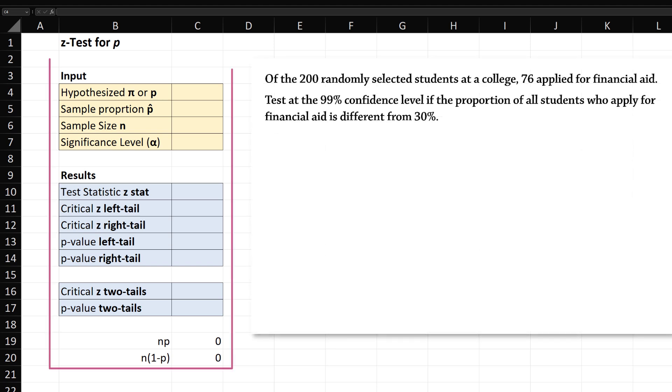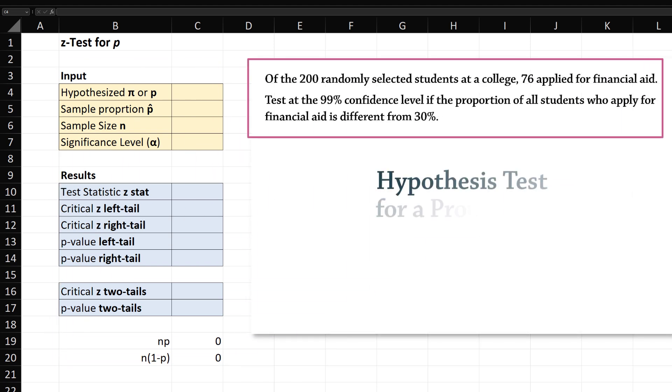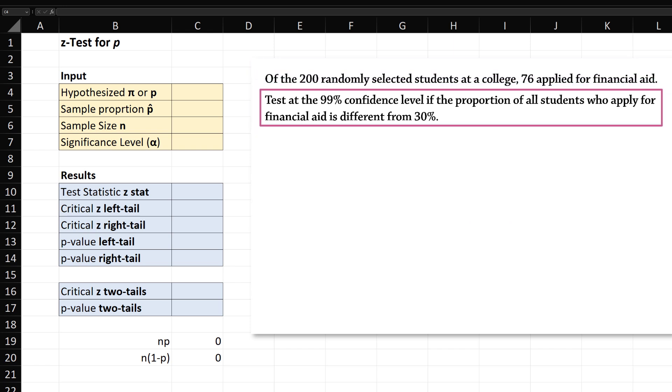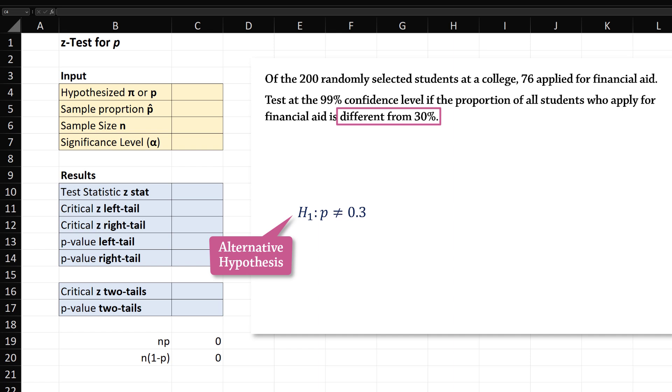I'm going to use this template to conduct hypothesis tests for this proportion question. First, we want to test if the proportion of all students who apply for financial aid is different from 30%. Therefore, the alternative hypothesis would be that pi or p is not equal to 0.3, and the null would be that pi or p equals 0.3.